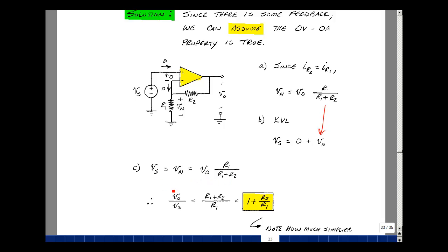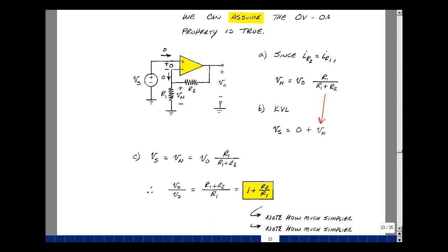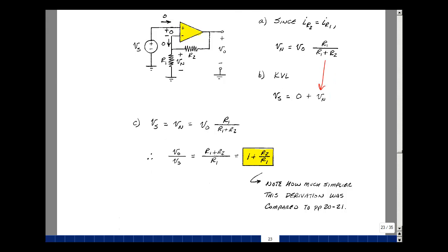So now I can solve for Vout. Divide by Vs, take the reciprocal of this, and you end up getting 1 plus R2 over R1. Notice how much shorter that was from what we did on pages 20 and 21. We took the limit in the first step instead of the last step.